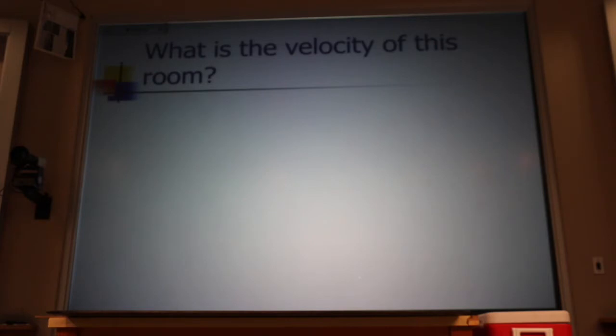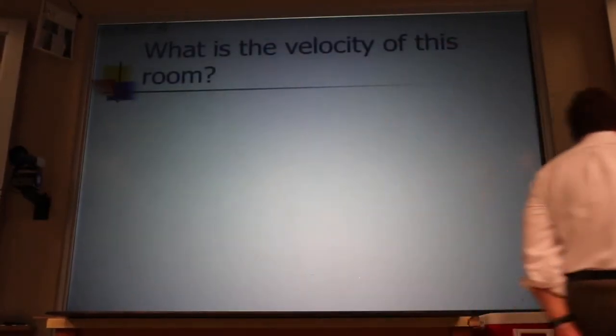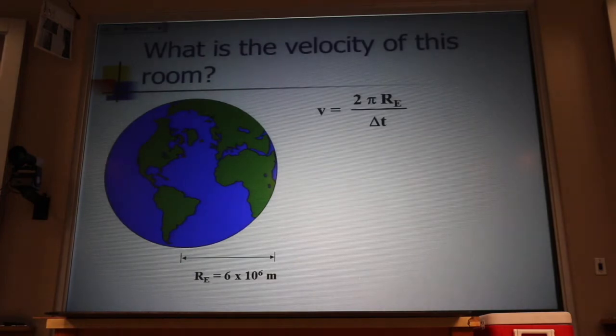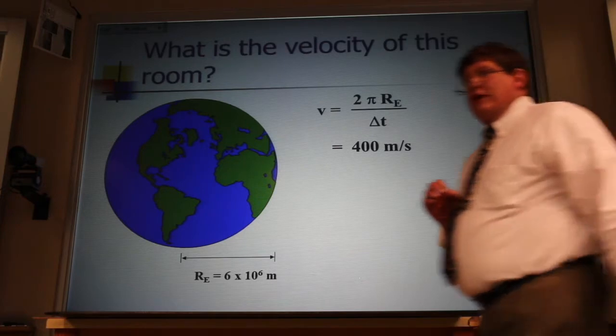And since everything's going towards Boston and Boston's that way, this whole room is going that way. And we can figure out how fast it's going by taking the distance it travels, 2 pi r, and dividing by the time it takes to go once around, 24 hours. And that will give us about 400 meters per second.